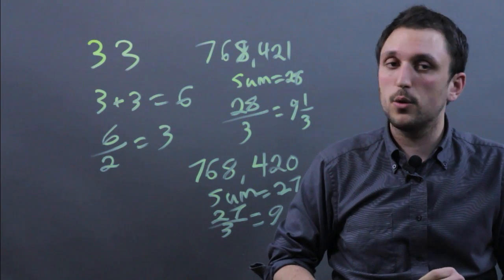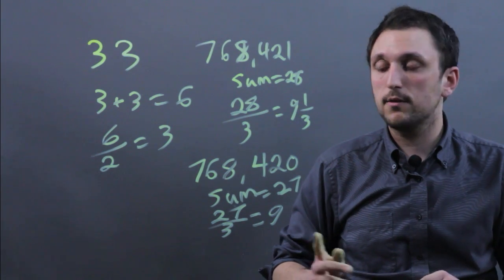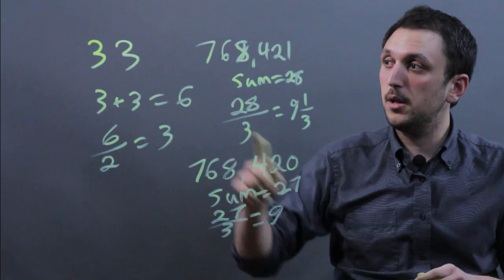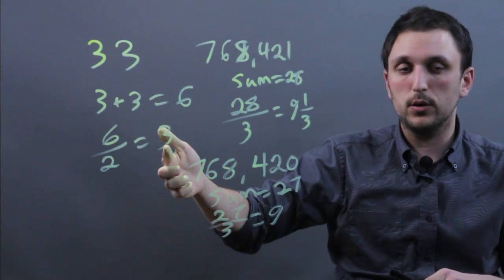So I'm Charlie Kasov and you just learned the rule to determine if a number is divisible by 3. Add up the digits and then divide and see if you get an integer.